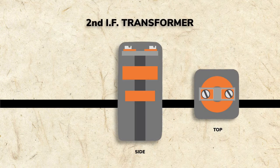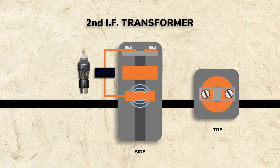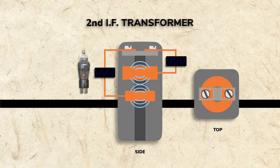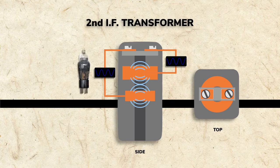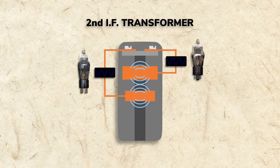The second IF transformer receives the amplified IF signal from the IF tube and refines it even further, just as the first IF transformer did. The result is a strong, highly tuned IF signal that's ready for the detector tube.